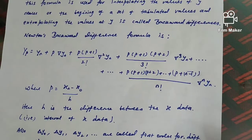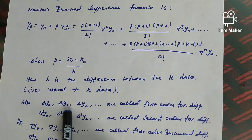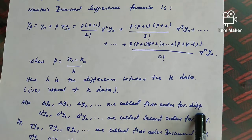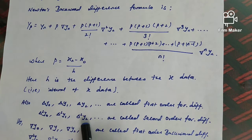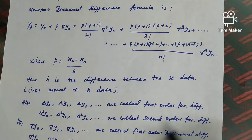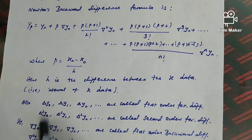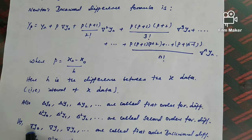We have notations Δy₀, Δy₁, Δy₂, and so on. These are called first-order forward differences. Δ²y₁, Δ²y₂ are called second-order forward differences, and Δ³ means third-order forward differences. When writing the delta symbol in reverse for backward differences, we use a different notation to differentiate forward from backward — that is why we use this reciprocal notation of delta.